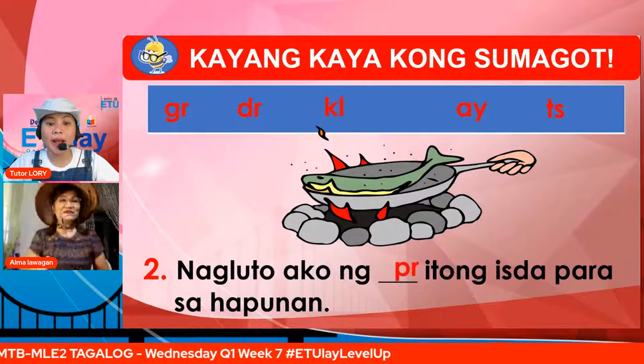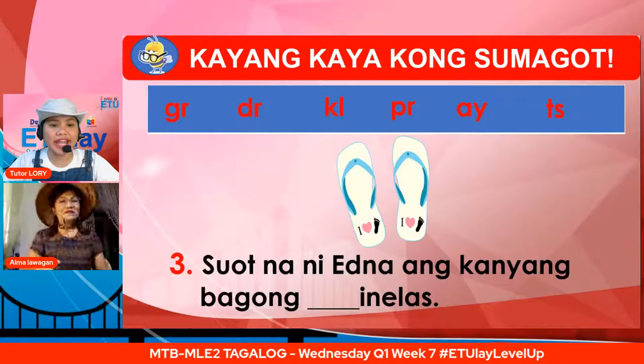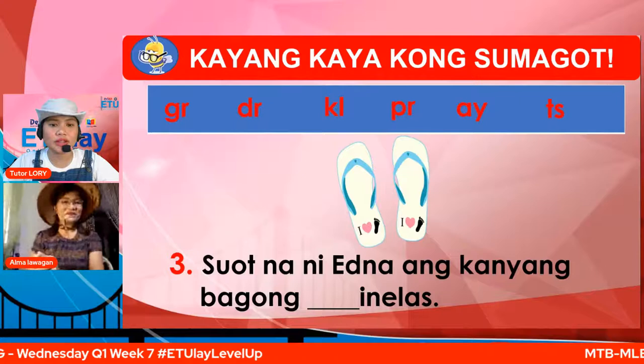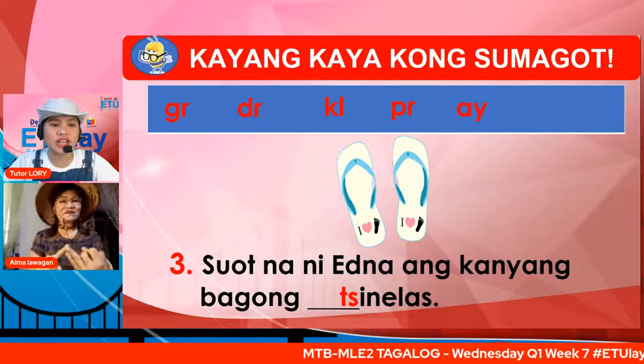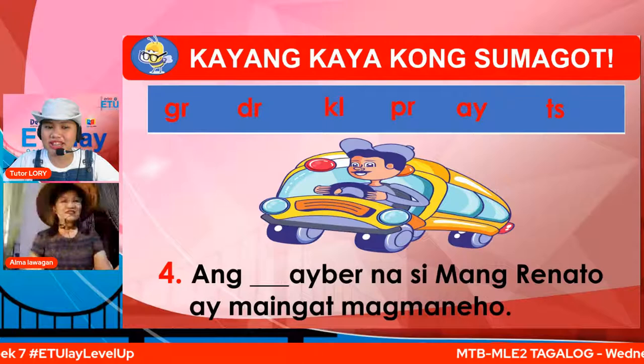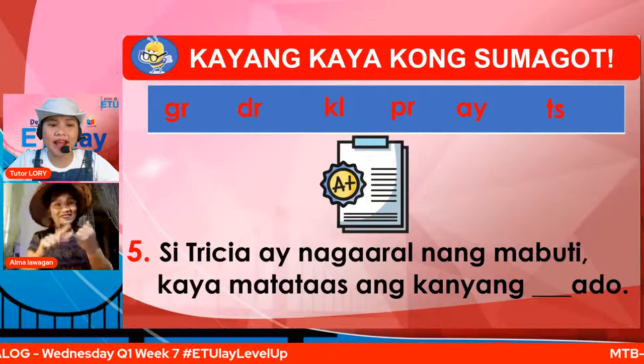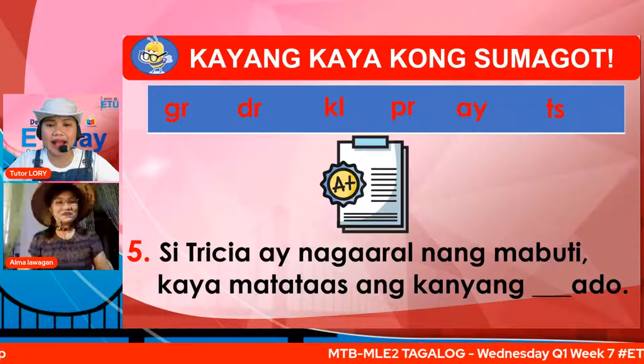Para sa pang-tatlo — suot na ni Edna ang bagong patlang. Ano ang iyong sagot? Kung PS para sa chinelas, mahusay. Para sa pang-apat — ang patlang driver na si Mang Renato ay maingat magmaneho. DR ba para sa driver ang iyong sagot? Magaling. Para sa pang-lima — si Trisha ay nag-aaral ng mabuti kaya mataas ang kanyang patlang na grado. Kung ang sagot mo ay GR para sa grado, magaling.